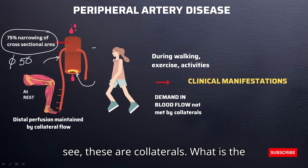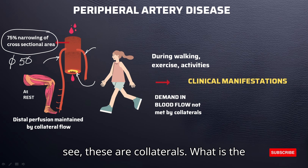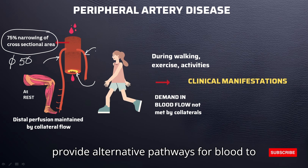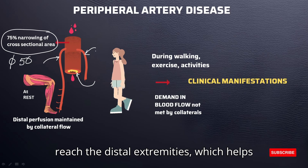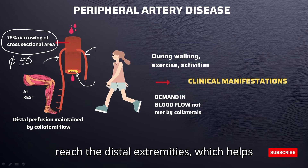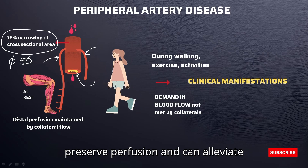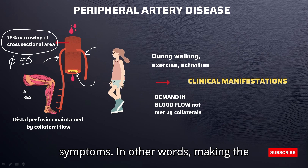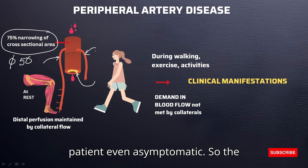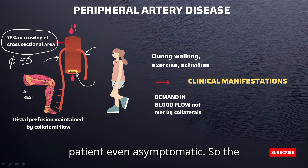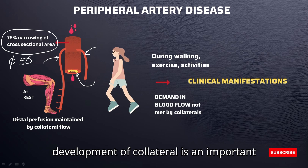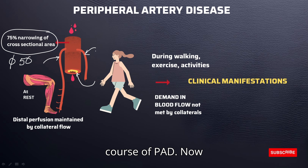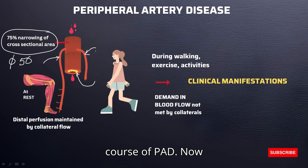As you can see, these are collaterals. They develop and provide alternative pathways for blood to reach the distal extremities, which helps preserve perfusion and can alleviate symptoms, making the patient even asymptomatic. The development of collaterals is an important factor that can actually determine the course of PAD.